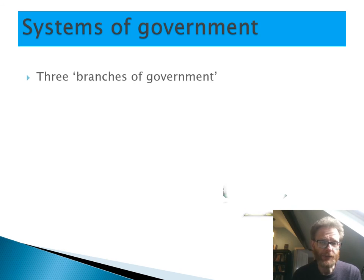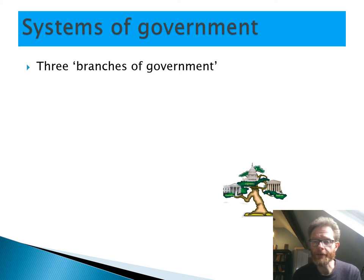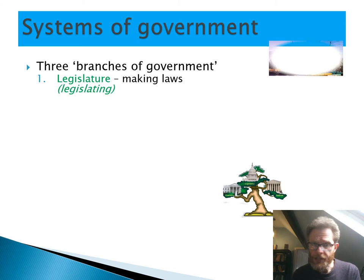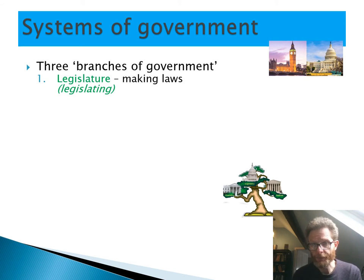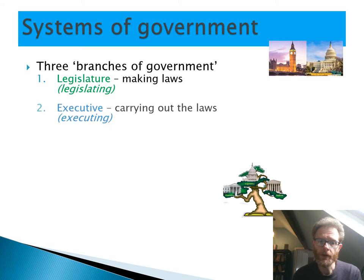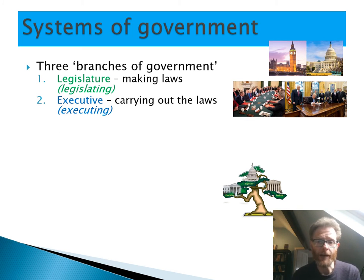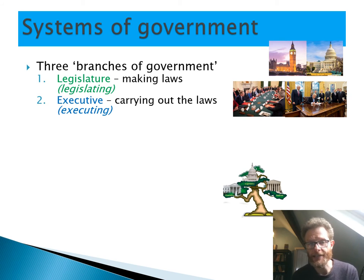In politics, we refer to three branches of government, and by that we mean the legislature — those who make the laws. In Britain, Parliament; in America, Congress. We refer to the executive — those who carry out the laws. In Britain, it's a collective executive, the Cabinet, with the Prime Minister at the head.